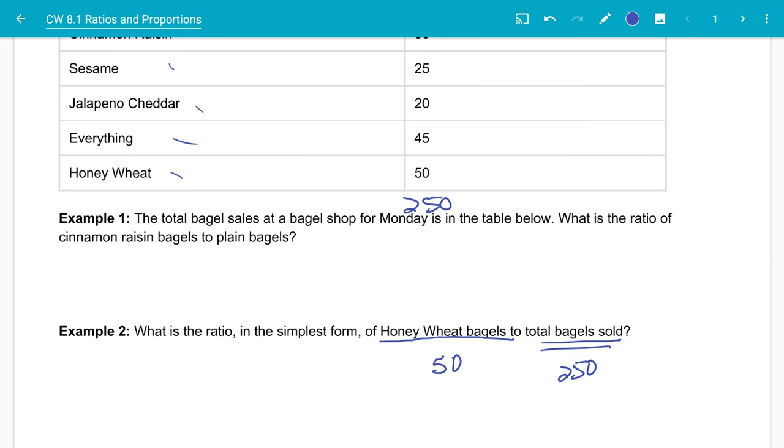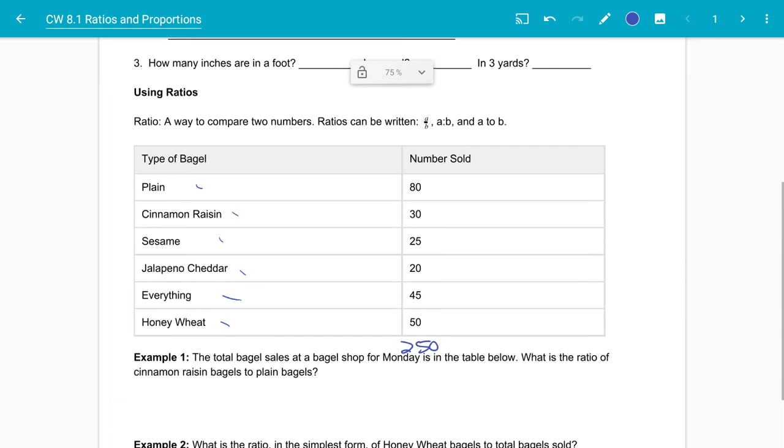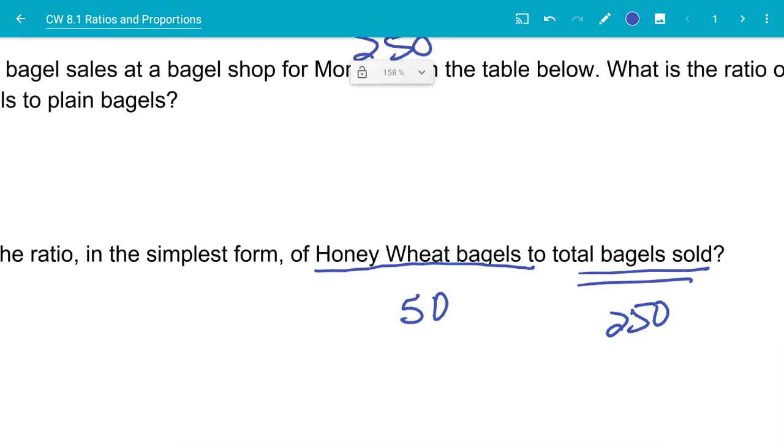So remember that we have to write out the ratio in simplest form. So 50 to 250 will reduce to one to five.